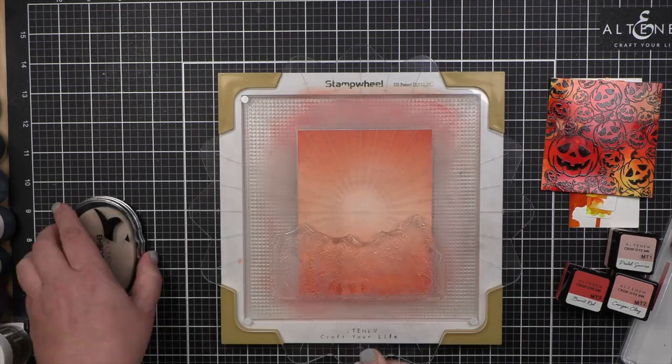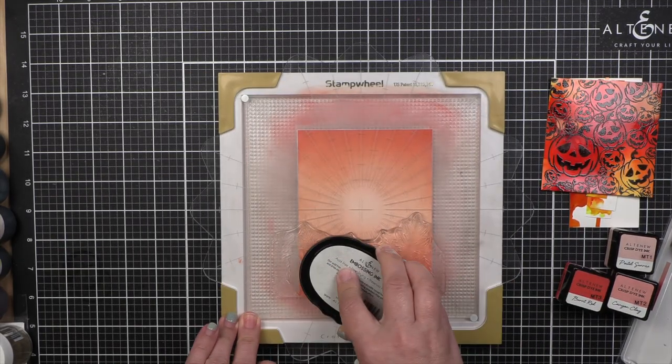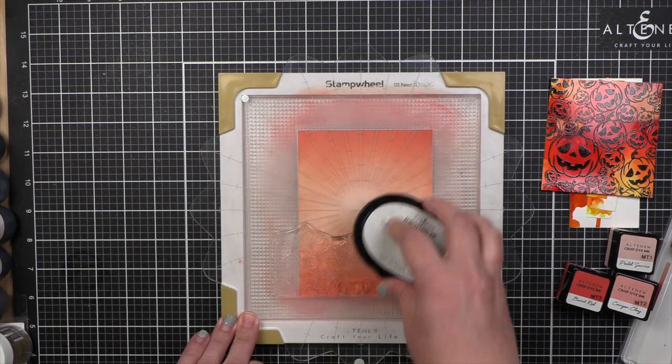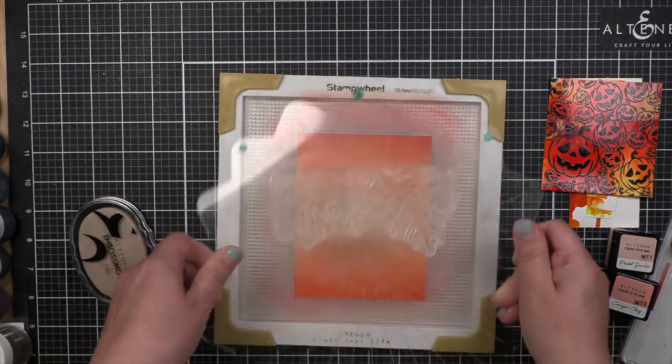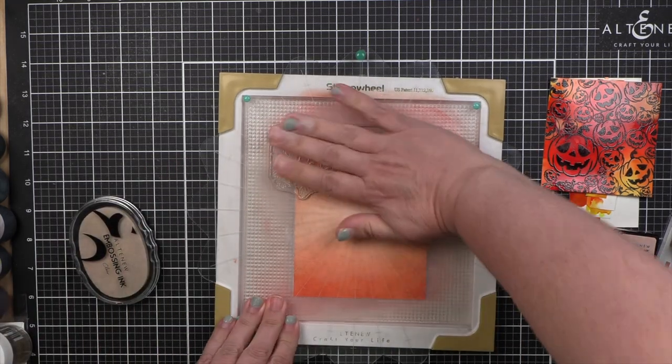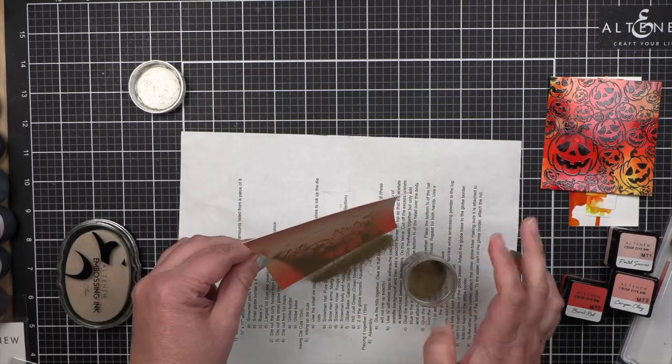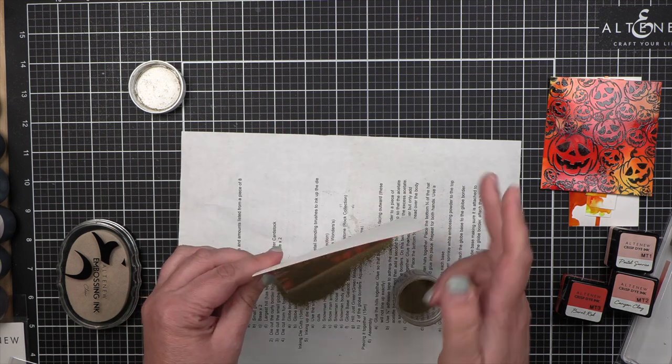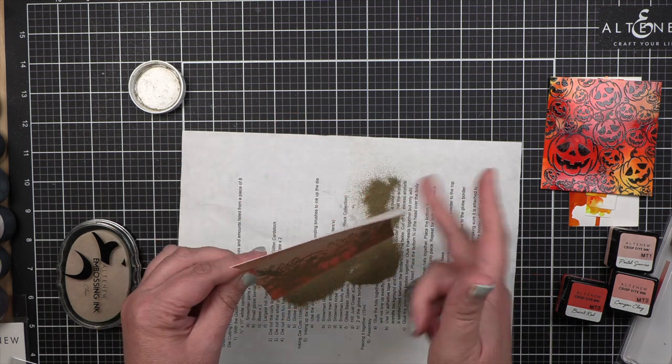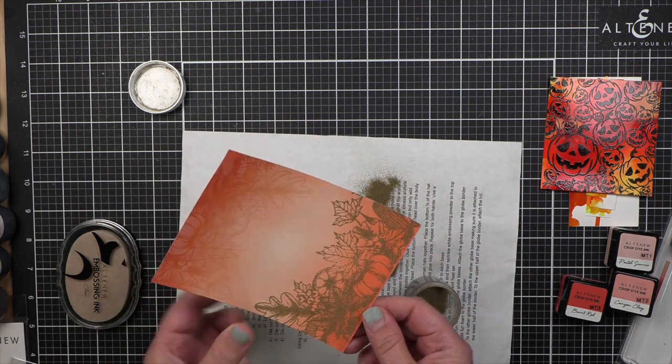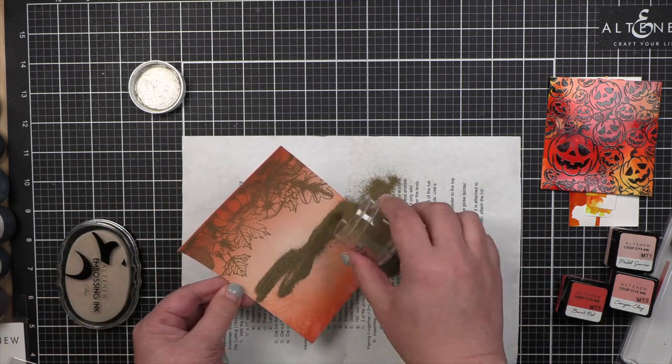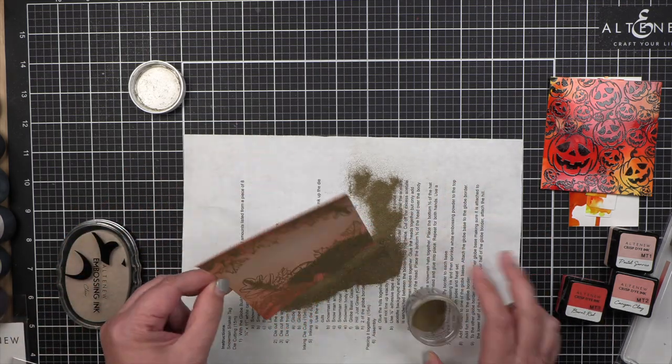This stamp set, Autumn Has Arrived, I am inking up with embossing ink and stamping this. You notice that I did it on the bottom, and then all I have to do is just flip the plate over because the stamp wheel allows you to do that. And I'm treating this with antique gold embossing powder on both sides. You can just see that image really shine.